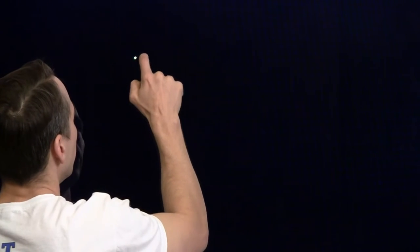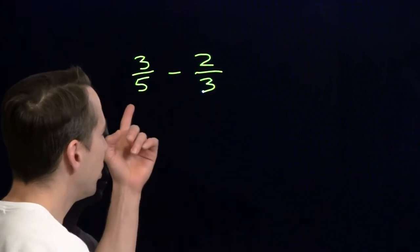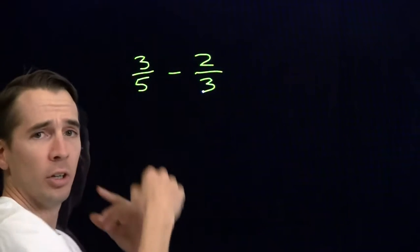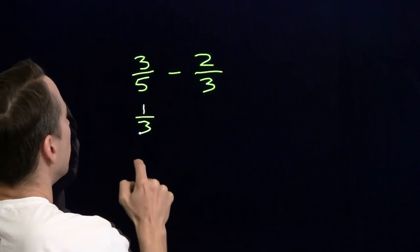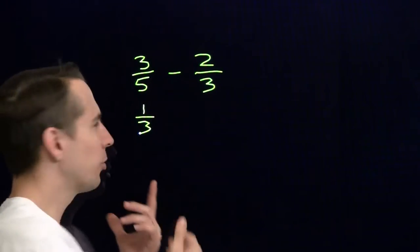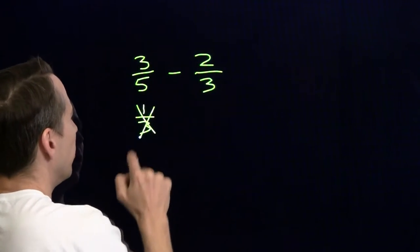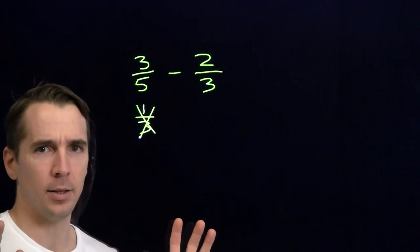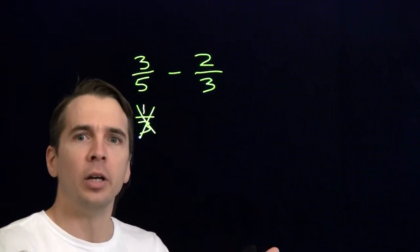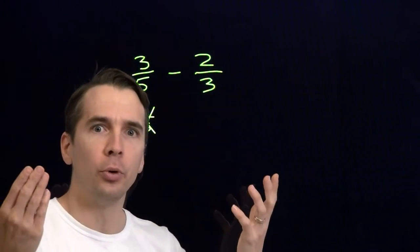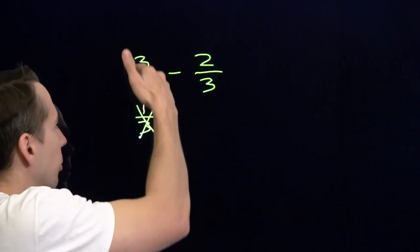Imagine we started off with 3/5 minus 2/3. This denominator is just 2 more than that one. Can we just subtract 2 from the numerators and the denominator and write that as 1/3? No, that's ridiculous. 3/5 is more than 1, and 1/3 is less than 1. We can't just subtract 2 from the numerator and denominator. When you're doing arithmetic with variables, make sure what you're doing is actually valid. Think about what math rule says you can do that — there's no rule that lets you just add or subtract things from both denominators.